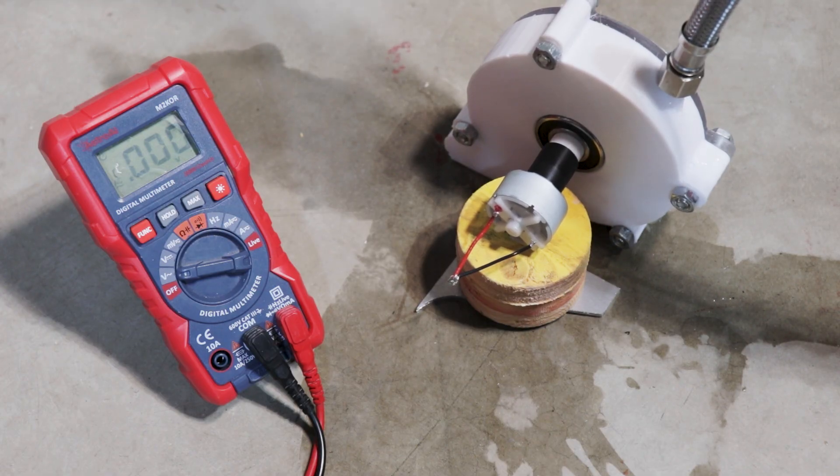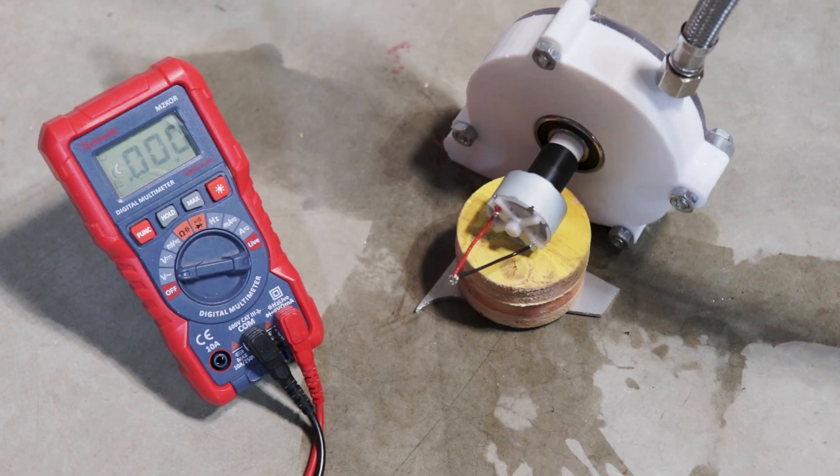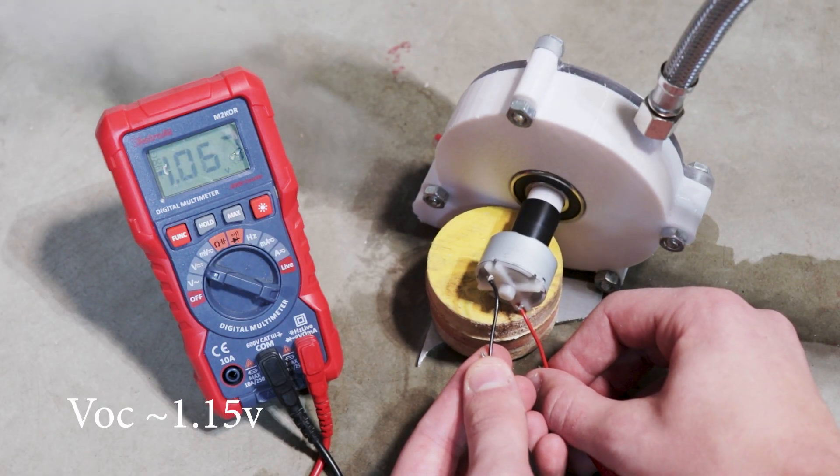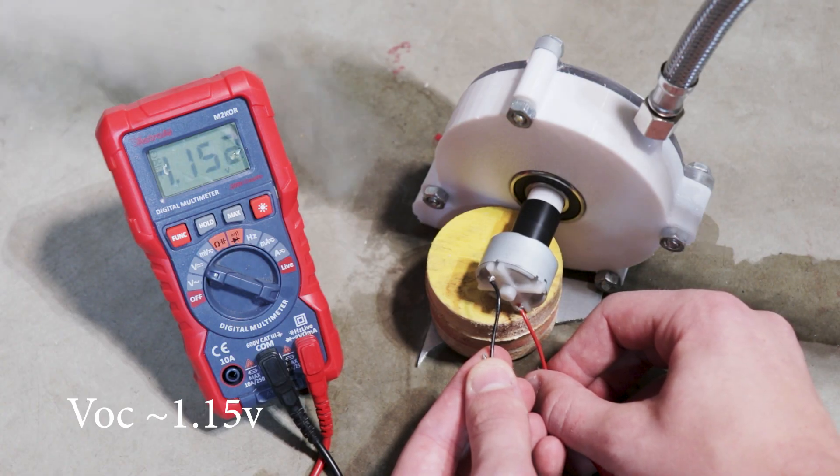Hooking up the motor, it seemed to wobble less than before, and it became very apparent early on with the voltage that we're definitely going to be generating more electricity this time around. Our open-circuit voltage seems to have doubled.